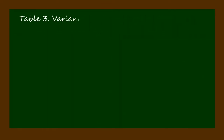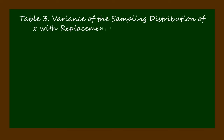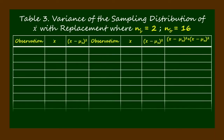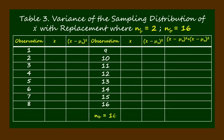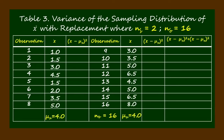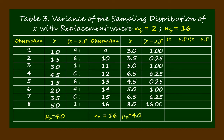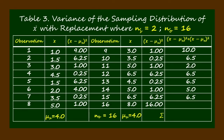Table 3 will help us solve the variance of the sampling distribution of means, with replacement, where the sample size is 2 and the number of observations is 16. On the first and fourth columns are the number of observations which is 16. On the second and fifth columns are the sample means. On the third and sixth columns are the squares of the difference between the sample mean and the mean of the sampling distribution of means. The last column contains the summation of those squared differences, which is equal to 60.